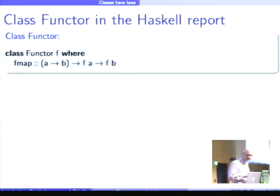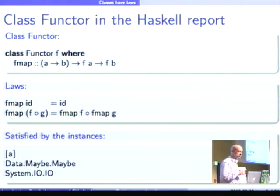This is the Haskell 2010 report. This is the class Functor, which has a method fmap. And the second thing the report says is instances of the functor class should satisfy these two laws. And then it also says that the laws are satisfied by lists, Maybe, and IO.